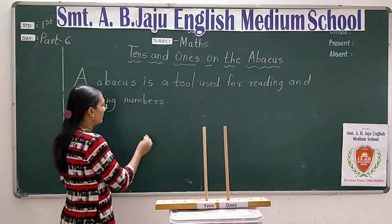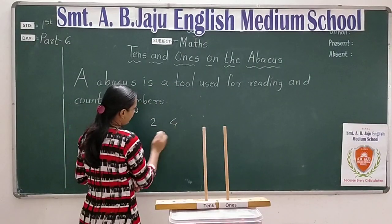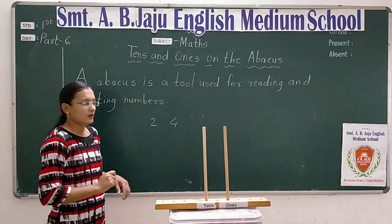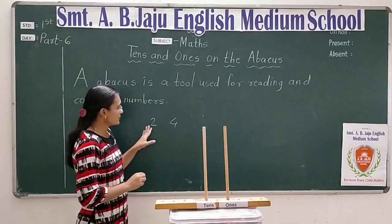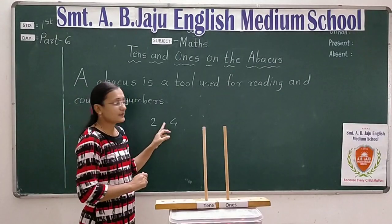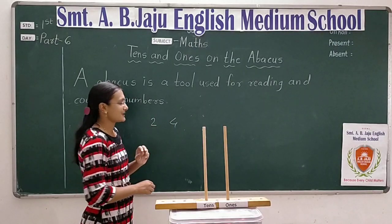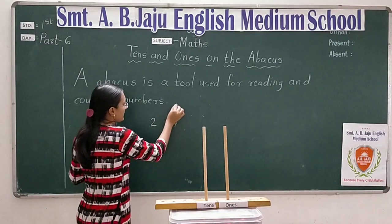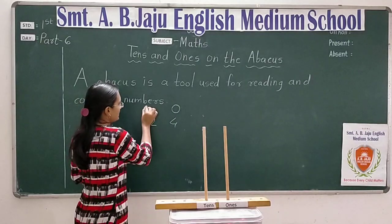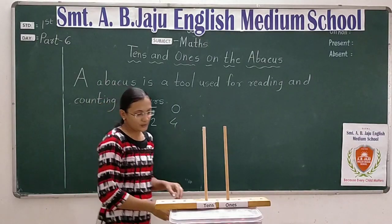Suppose we have number 24. Can you tell me which number is in tens place and which number is in ones place? Ones place mein konsa number hai? Four. Aur tens place mein konsa number hai? Two. Okay?